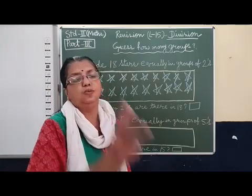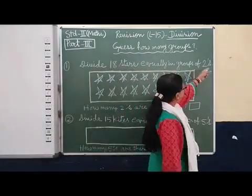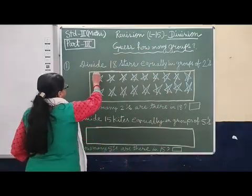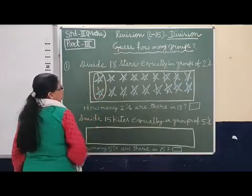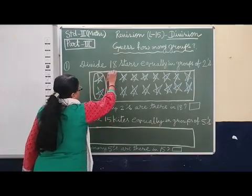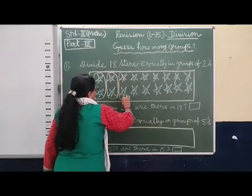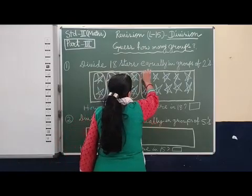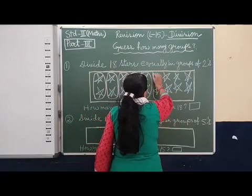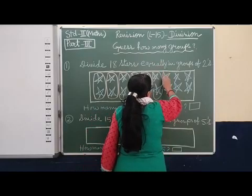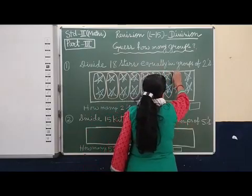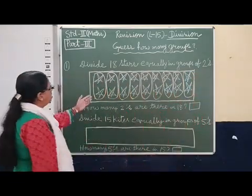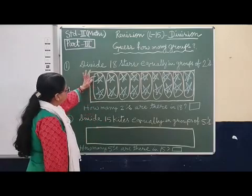Now we have to make groups of two. It is given: equally in groups of two. That means we have to keep two stars in one group. This is one group with two stars. This is the second group with two stars. Next group with two stars. Next group with two stars. Next group with another two stars. Similarly, we keep making groups of two — everywhere you can see two stars make one group.